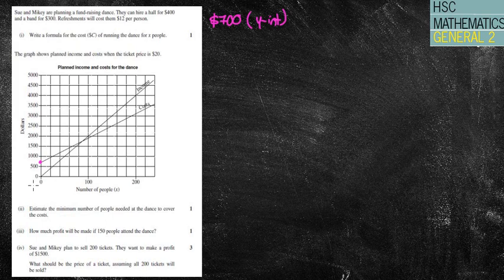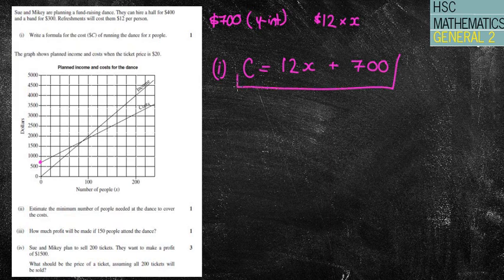The refreshments will cost them $12 per person. So that's $12 for the number of people that you're going to have as well. So when it says for part 1 write a formula for the cost. Well it's costing me $12 per person and it's got X to the number of people. Plus the extra $700 that I've got for my Y intercept. All that start off costs.